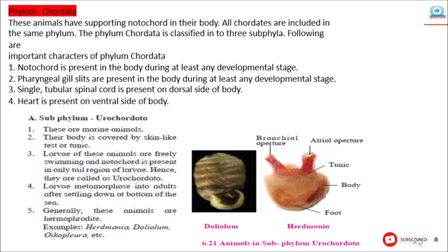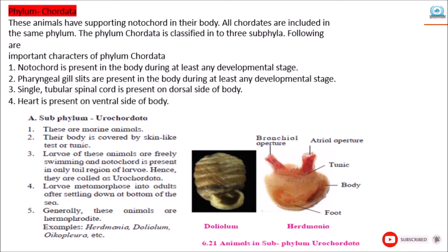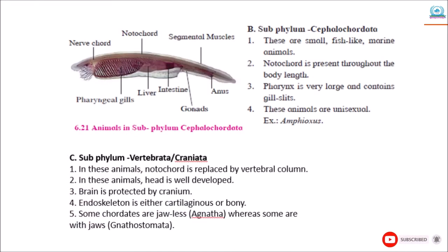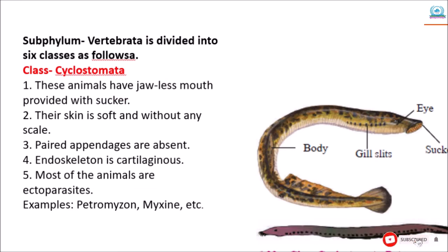The following are important characters of Phylum Chordata: First, notochord is present in the body during at least any developmental stage. Second, pharyngeal gill slits are present during at least any developmental stage. Third, a single tubular spinal cord is present on the dorsal side of the body. Fourth, the heart is present on the ventral side of the body. The first subphylum is Urochordata. These are marine animals. Their body is covered by a skin-like test or tunic. Larvae of this animal are freely swimming and notochord is present only in the tail region of the larvae. Hence, they are called Urochordata.